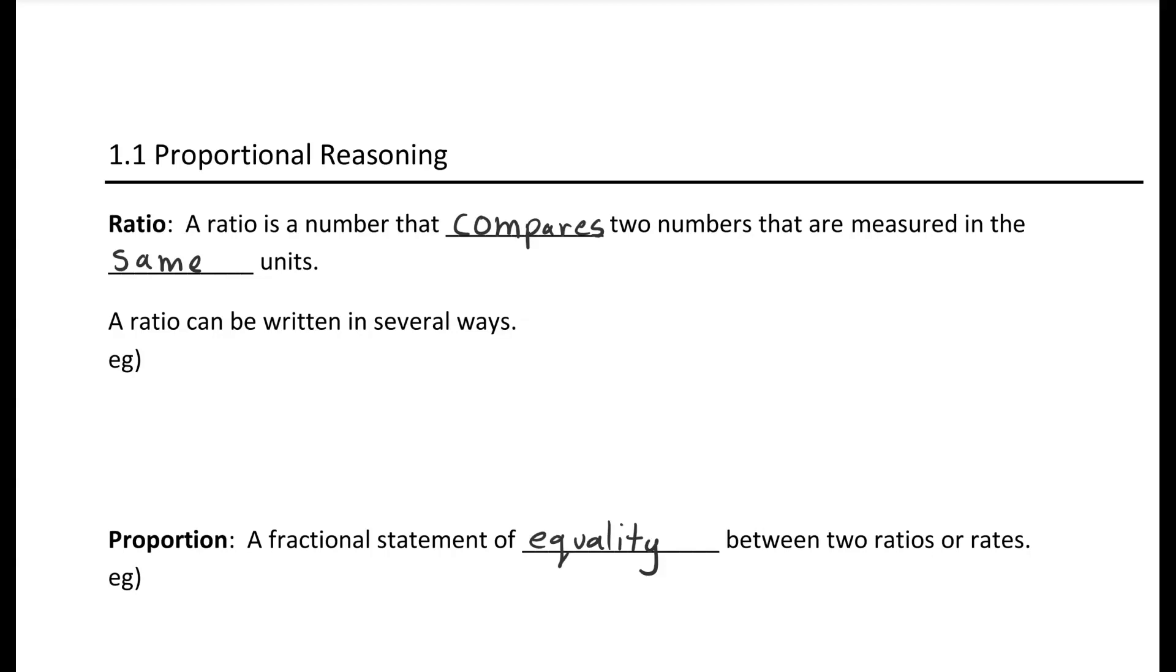So there's two terms we have to look at first. The first one is ratios. A ratio is a number that compares two numbers that are measured in the same unit. A ratio can be written in several ways. If you're baking a cake and you're looking at two cups of flour for every three cups of sugar, this would be written with a two colon three or as a fraction of two over three.